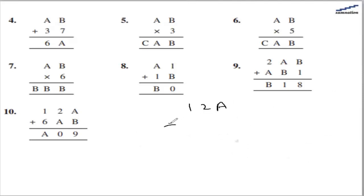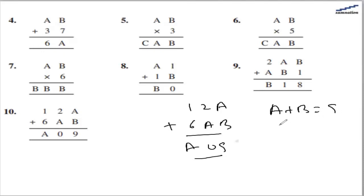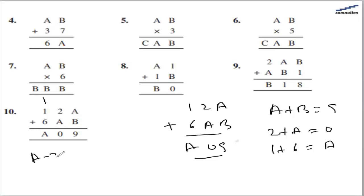For the 10th part, 12a plus 6ab gives a09. So a plus b equals 9, and 2 plus a gives 0. Since adding something to 2 results in 0, there must be a carry, meaning 2 plus a plus carry equals 10, so a is 8. Also, 1 plus 6 plus carry equals a. With a as 8, replacing gives 2 plus 8 is 10 with no further carry. So a is 8 and b is 1.